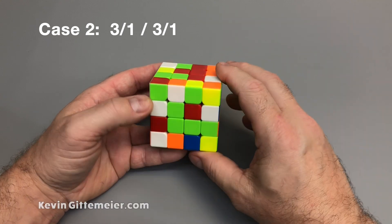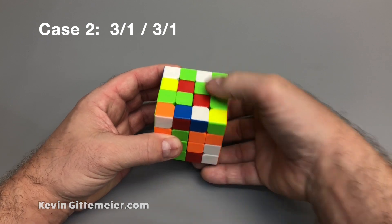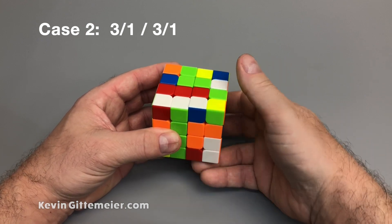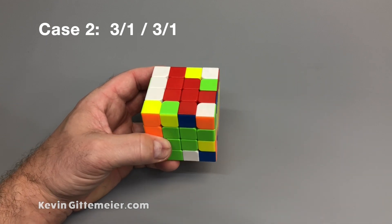So for example, if I had it like this, I need that green up here to match. So I just do that. So it doesn't matter the different iterations. It's the same pattern, and we solve it the same way.